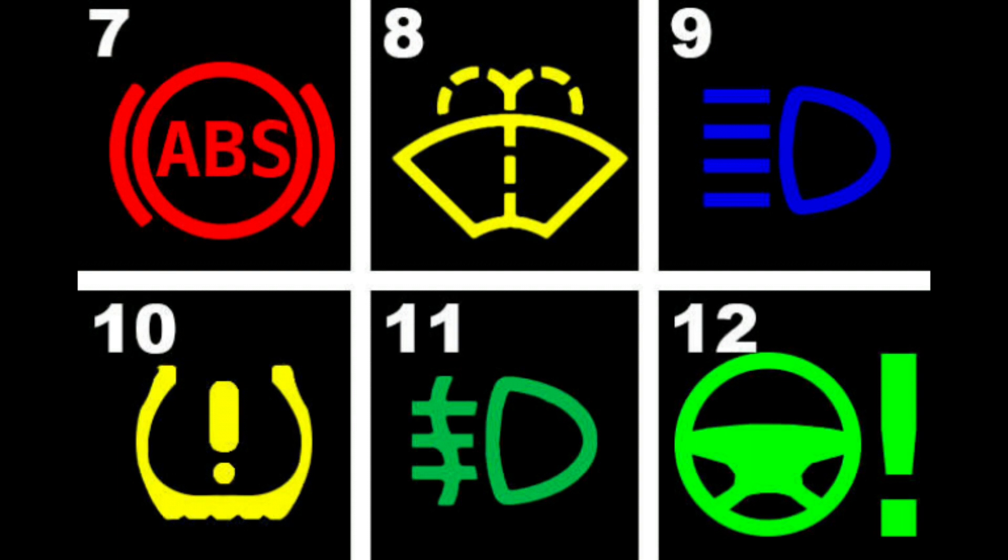Number 10: Low tire pressure warning. What it looks like: A misshapen horseshoe with an exclamation point in the middle. What it means: